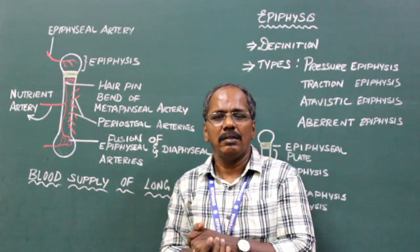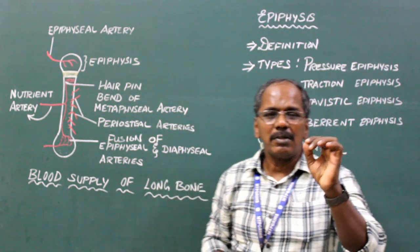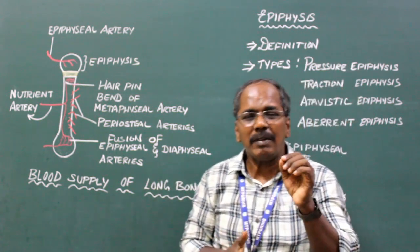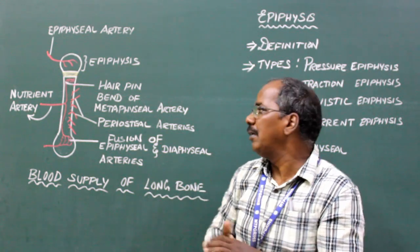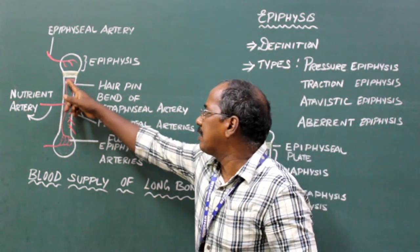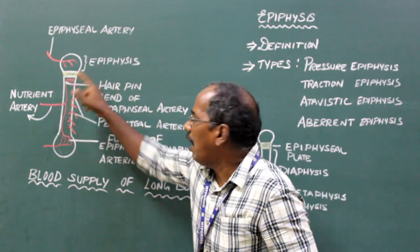In children, the metaphysis is the zone of active growth and has rich blood supply through end arteries which have a hairpin bend.